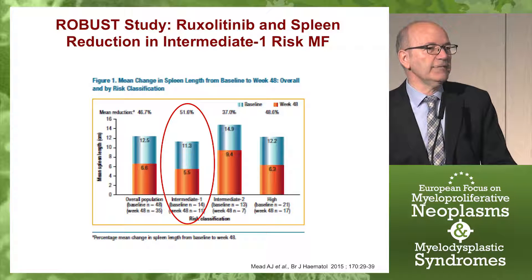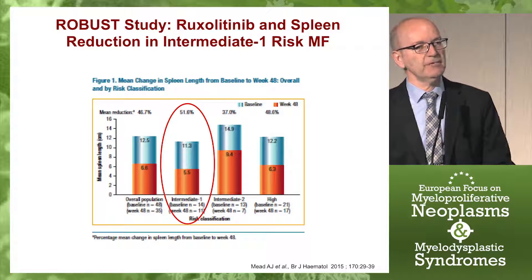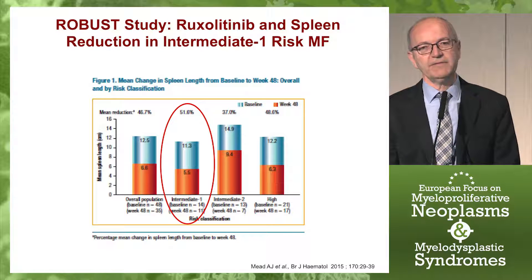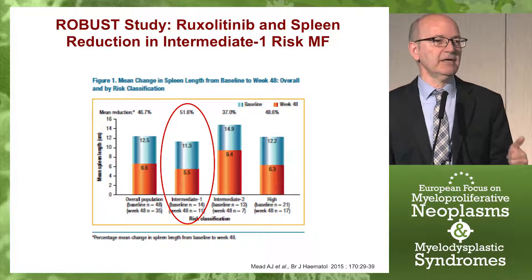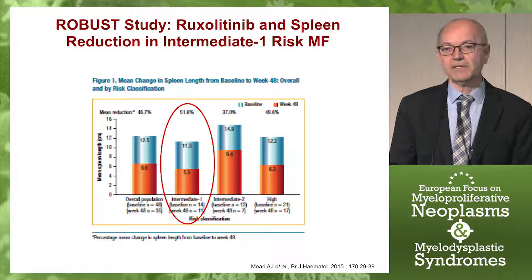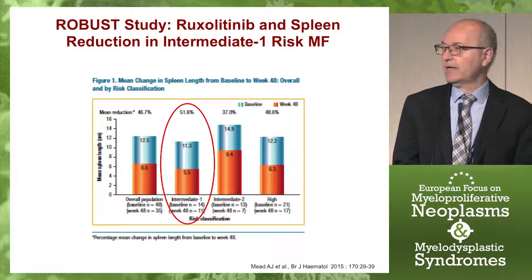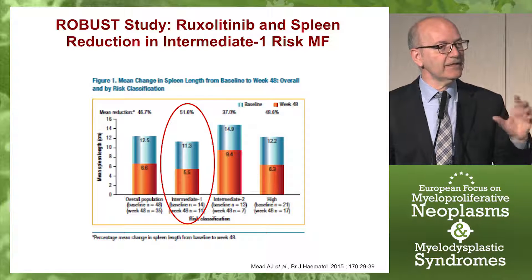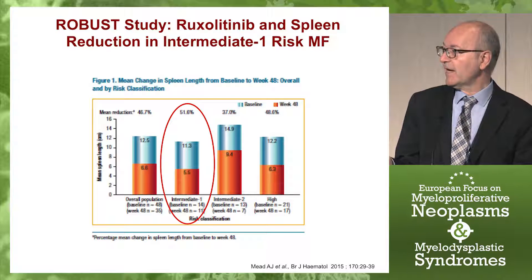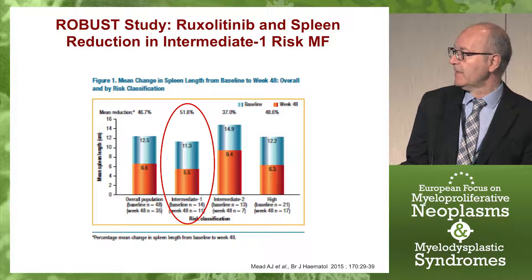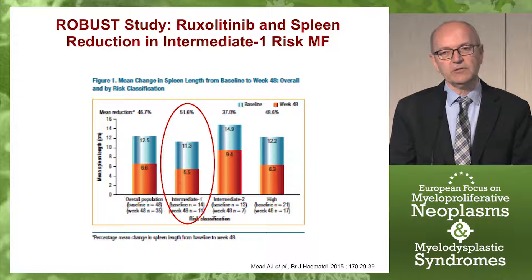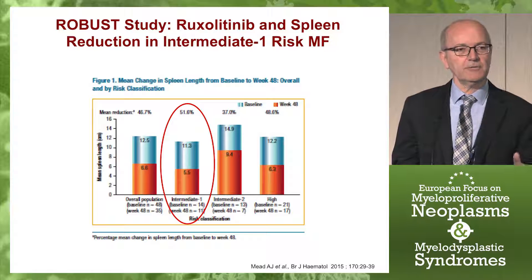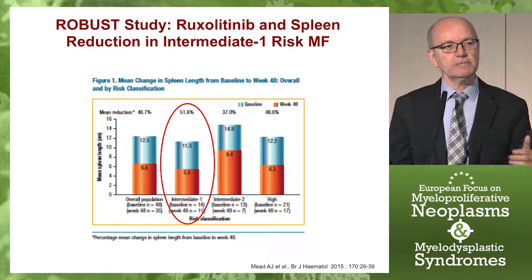What about the use of the JAK inhibitor? When I say JAK inhibitor, I will refer to ruxolitinib because it's the only drug we can use in clinical practice in patients with intermediate-one risk myelofibrosis. We know that in the phase-three studies, only patients with intermediate-two and high-risk myelofibrosis were included, so data in intermediate-one risk patients are very limited. We have data from a British study, the ROBUST study, in which some intermediate-one risk patients were included, and there was a clear effect on the reduction of the spleen in those patients treated because of symptomatic splenomegaly.